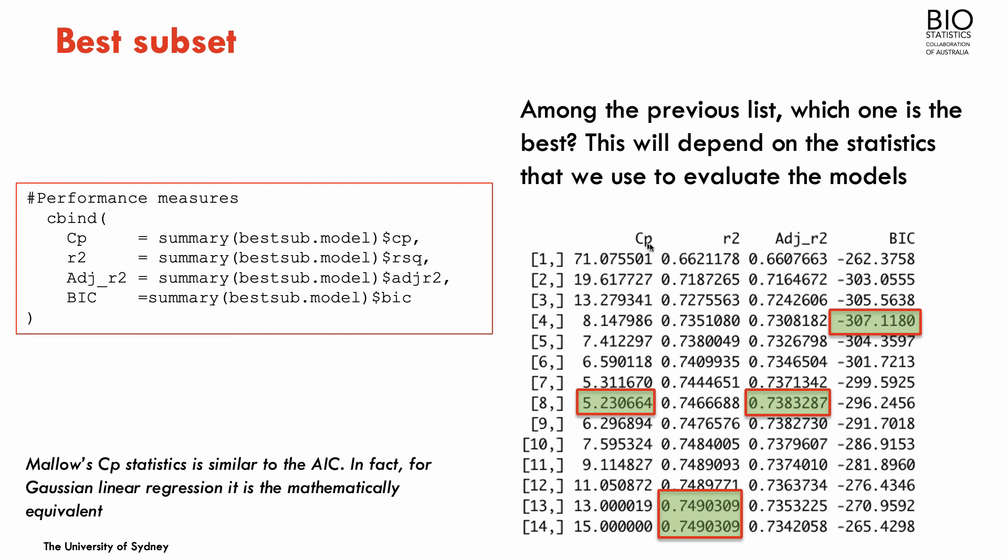And depending what criteria you want to use, you might have a slightly different answer. With the Mallow CP statistic, or the AIC statistic, the best subset includes eight predictors. This is also similar to the adjusted R squared. But for example, if you use the BIC criteria, we'll get a model with only four predictors. And this is because BIC tends to favor more simple models, where the AIC favors more the prediction ability of the model.